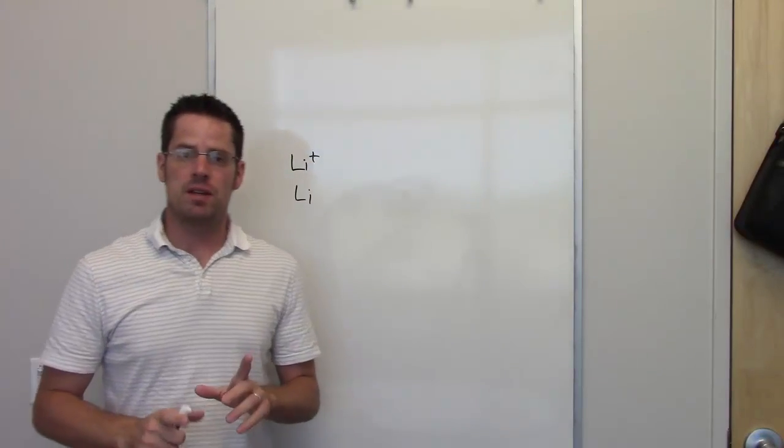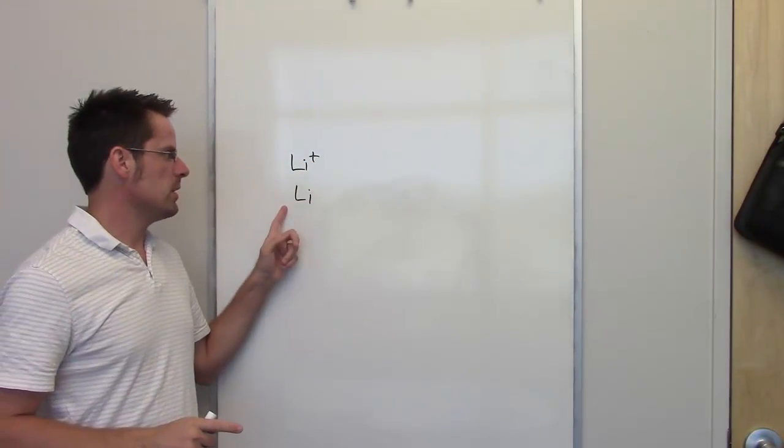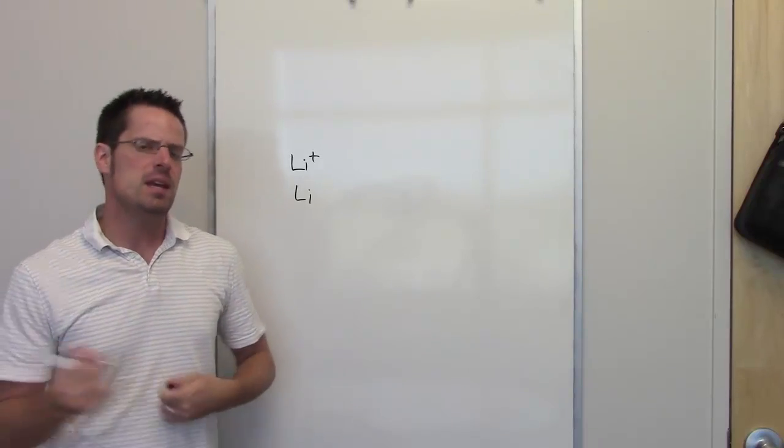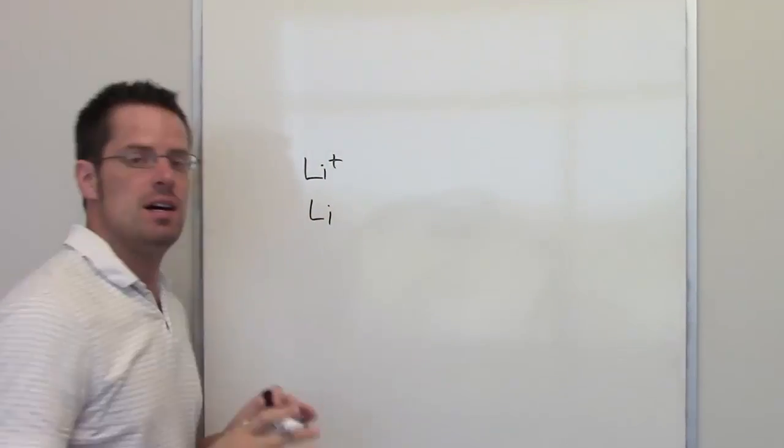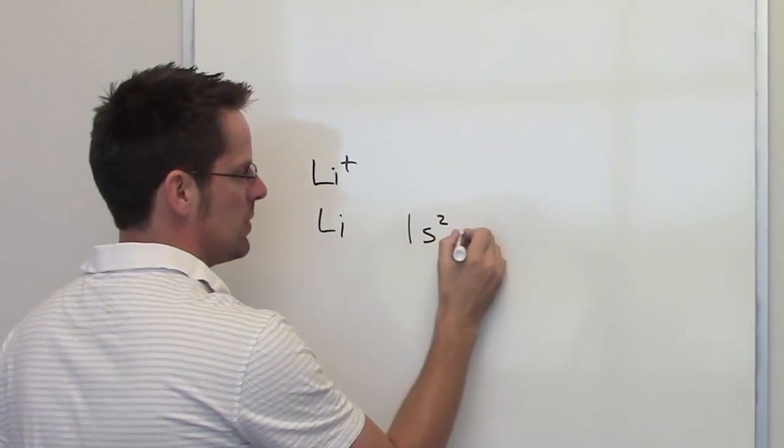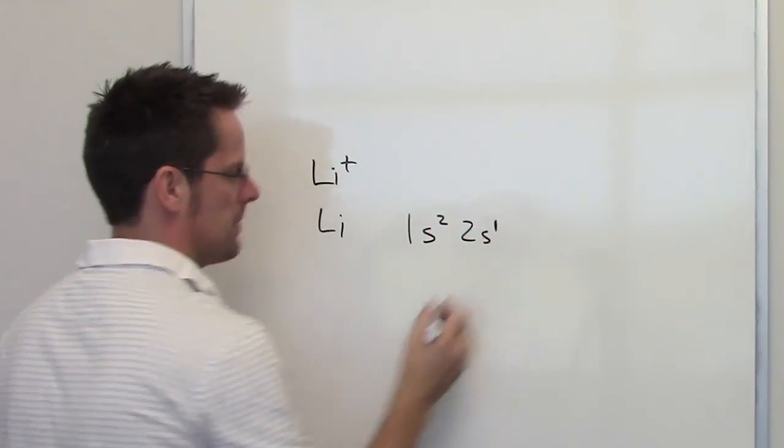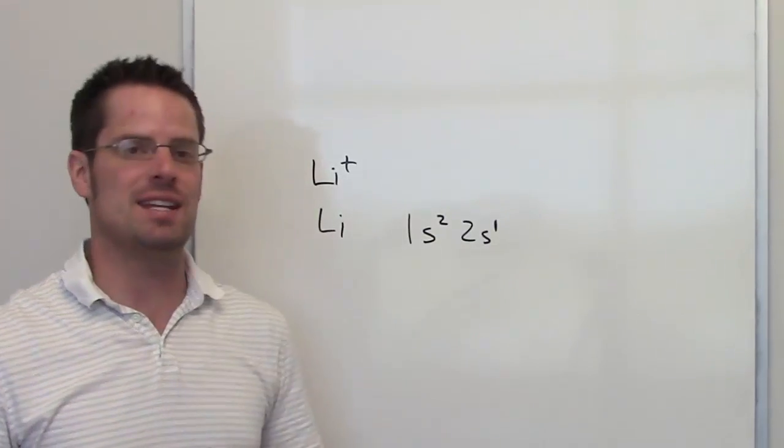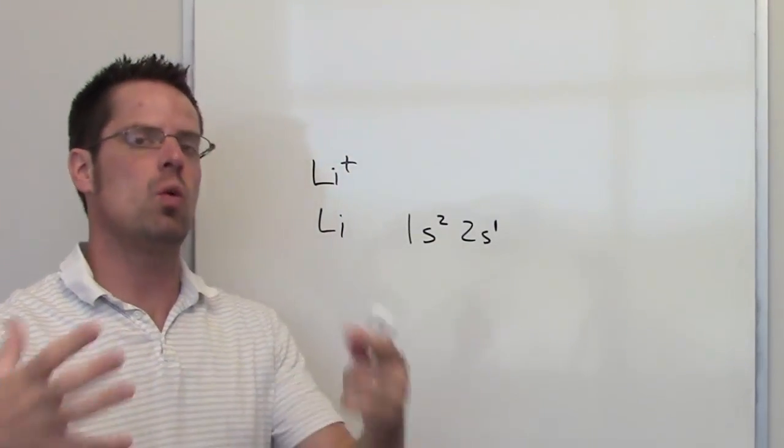In this first question, we're asked to compare the sizes of neutral lithium with lithium cation. As we look at the periodic table, you can see that neutral lithium has an electron configuration of 1s2, 2s1. That means that its outermost electron is in its 2s orbital.